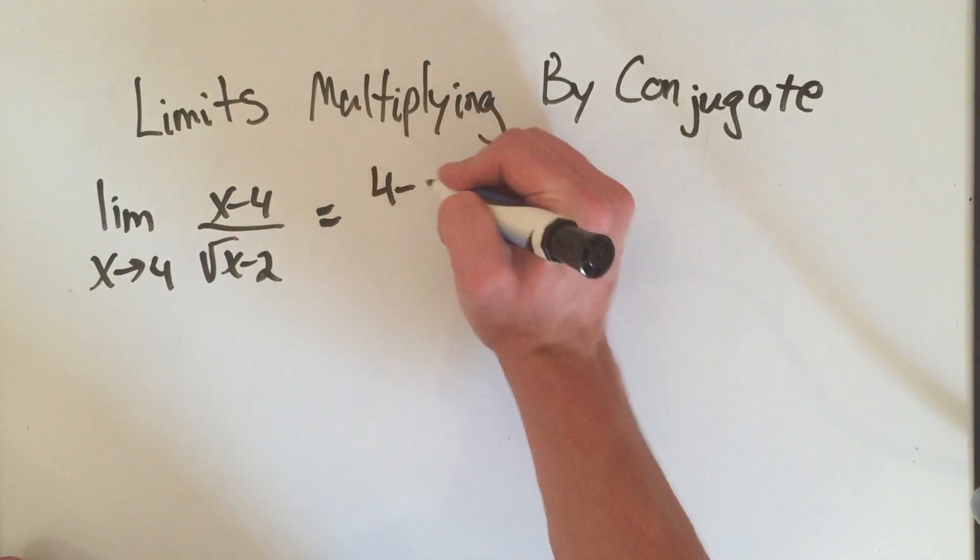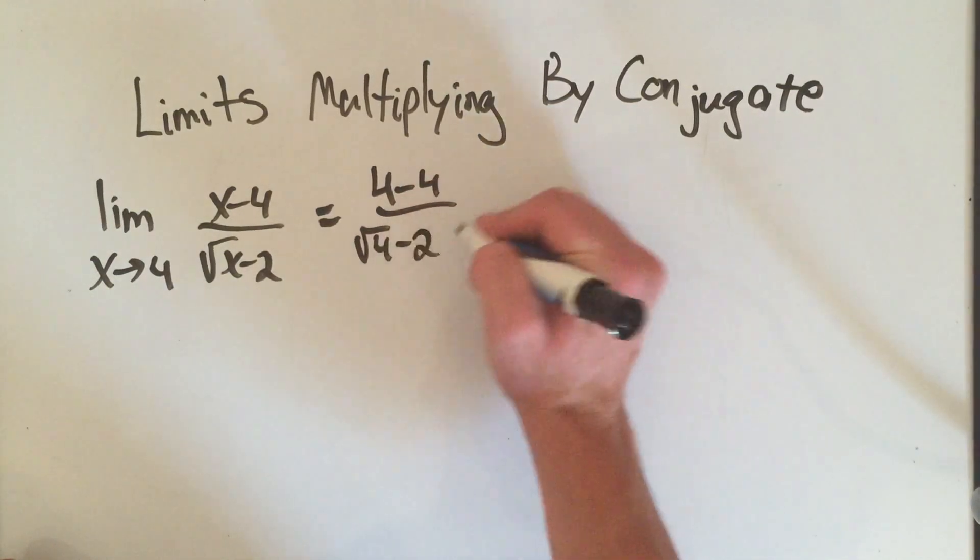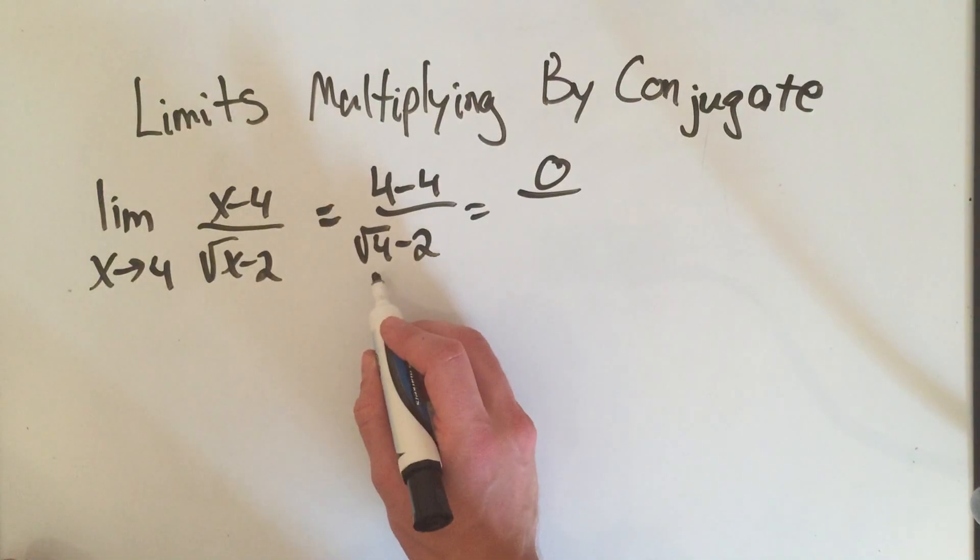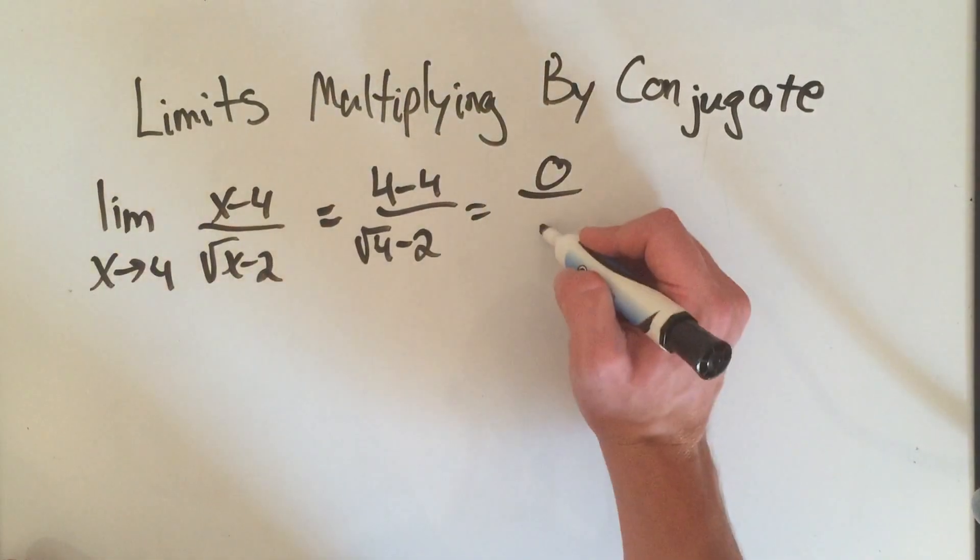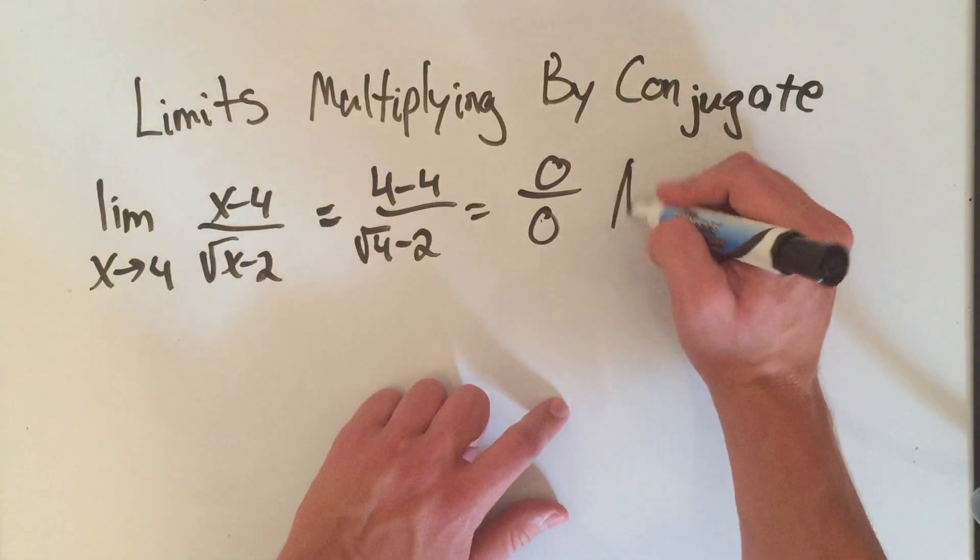So we're going to plug in 4 for x. On top we'll get 4 minus 4, square root of 4 minus 2. 4 minus 4 is 0, square root of 4 is 2, minus 2 is 0. So we get 0 over 0, which means we have to do algebra.